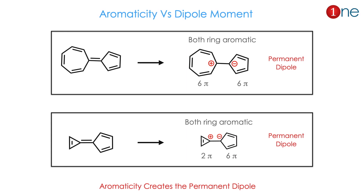We will see some more examples to practice. Here you have a 6-member and 5-member ring with a double bond. The charge is separated to create an aromatic compound — both rings are aromatic, both are a 6-5 system, creating a permanent dipole. In the second example, a cation is formed in a 3-member ring and an anion is formed in a 4-member ring, also creating a permanent dipole.